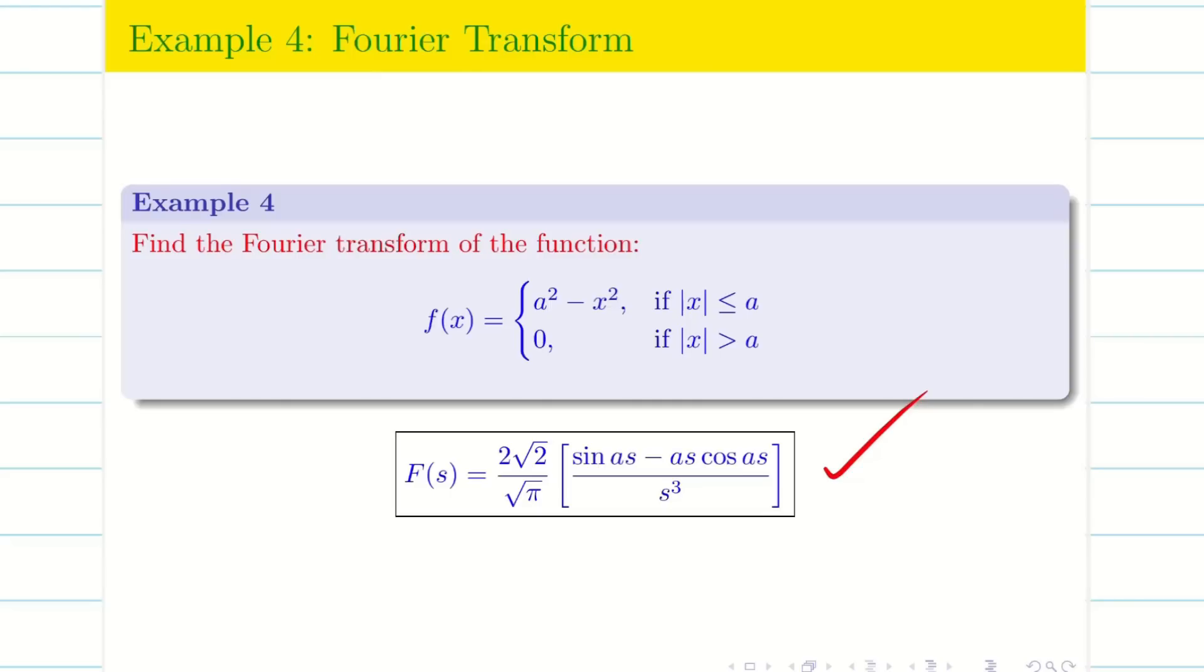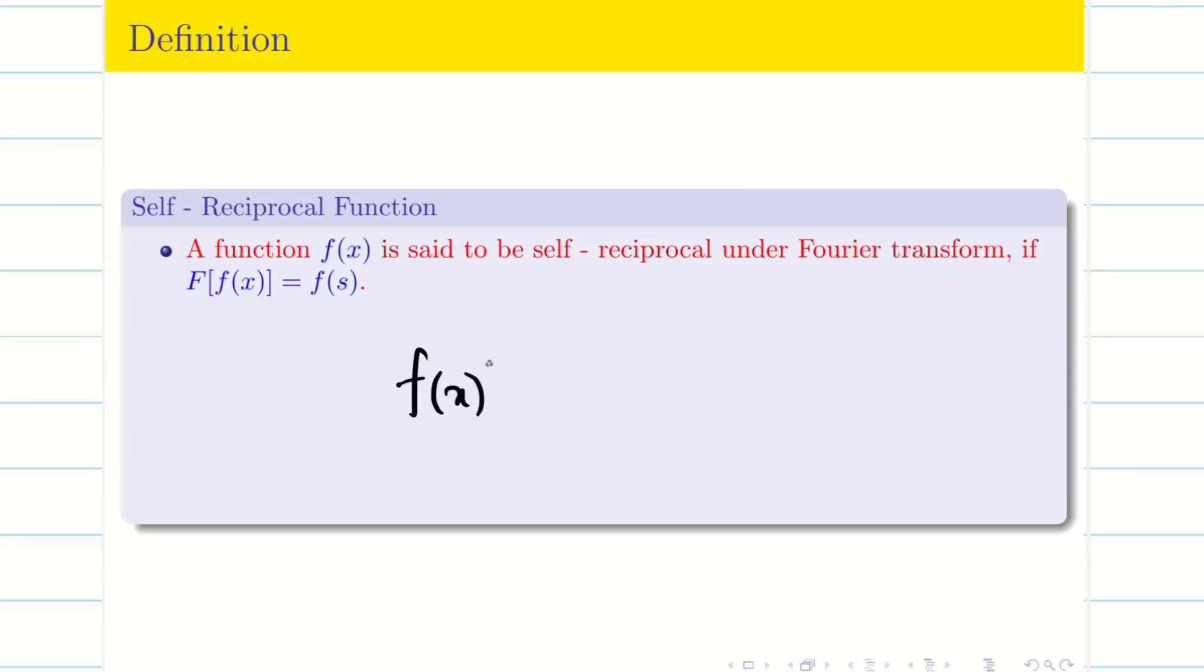Now in today's session we are going to deal with a different problem. A function f(x) is said to be self-reciprocal under the Fourier transform when the answer is f(s). For example, let us consider e to the power minus x squared by 2. If I take Fourier transform of this, my answer should be e to the power minus s squared by 2. My input is e to the minus x squared by 2 and my output is e to the minus s squared by 2.